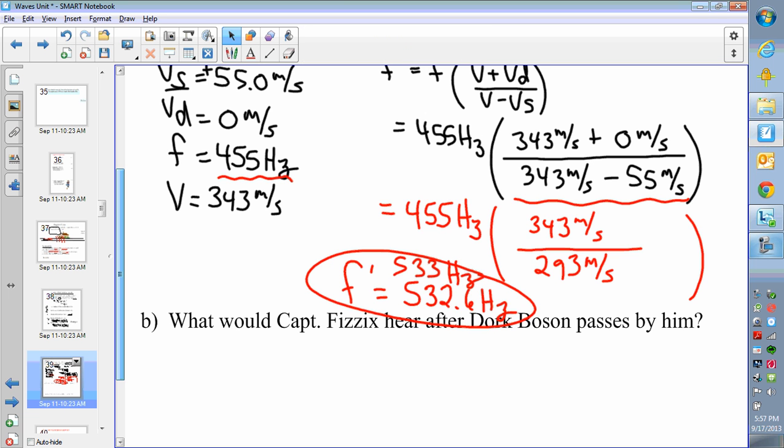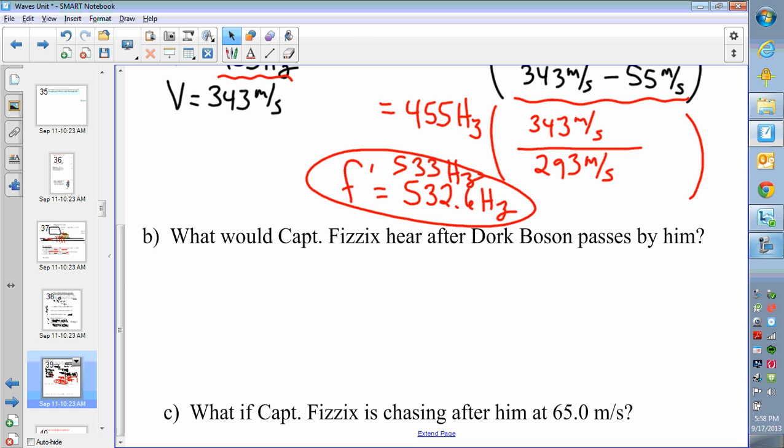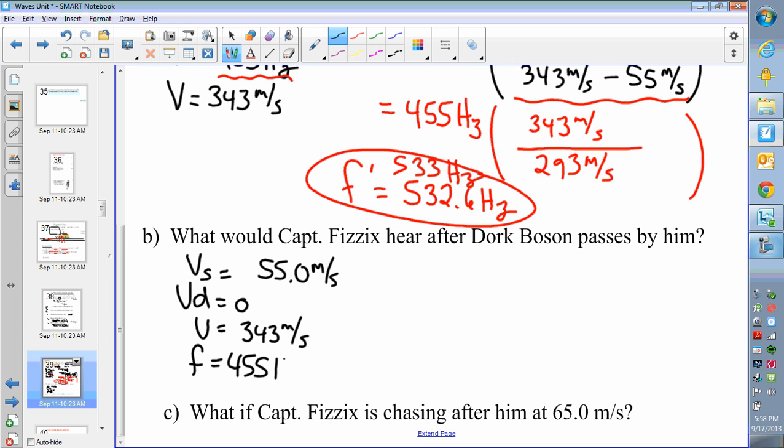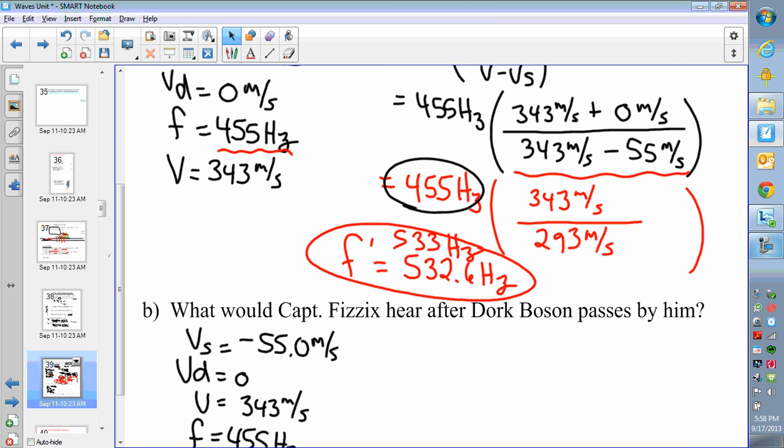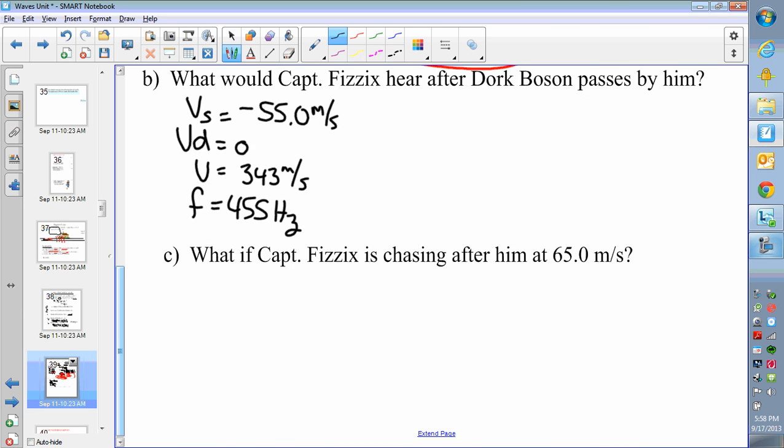All right. So, what would change after Dork Boson passes by? The only thing that's going to change, your source is still moving at 55 meters per second. Your detector is still stationary. The speed of sound is still 343. The frequency is still 455. The only thing changed is that you're now moving away. So, you're going to put in a negative 55 meters per second. If you're moving away, the answer better be less than the original 455 meters per second. Really, what's going to change here is at this step right here, right in this point here, this sign is about to change because the 55 is now different.